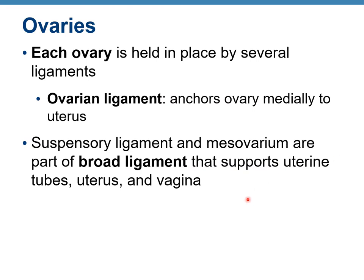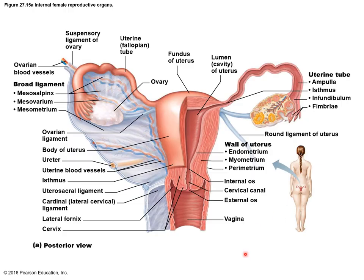Each ovary is held in place by several ligaments. The ovarian ligament anchors the ovary medially to the uterus. The suspensory ligament and mesovarium are parts of the broad ligament that support uterine tubes, uterus, and vagina. On this diagram you can see the ovarian ligament connecting the ovary to the wall of the uterus, the mesovarium, and the mesometrium as part of the broader broad ligament.